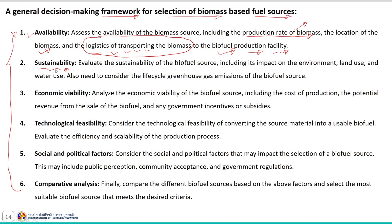The second criterion is sustainability — one needs to evaluate the sustainability of the biofuel source, which includes its impact on the environment, land use and water use. The selected biomass source should not have a negative impact on the environment, should not require excessive water for cultivation, and since the crops are high-yielding and fast-growing, much land area should not be occupied during cultivation. The life cycle greenhouse gas emissions of the biofuel source must also be considered.